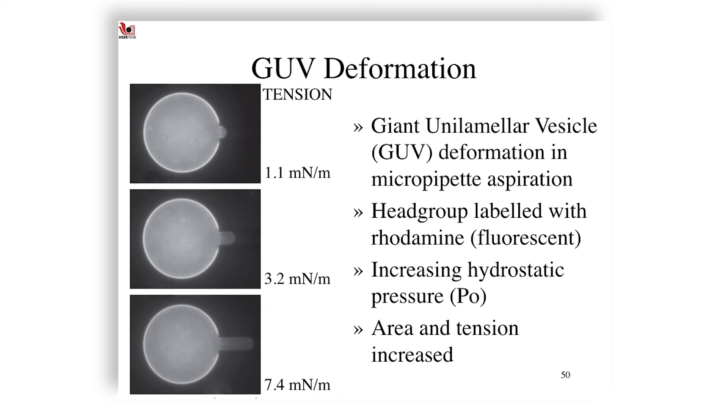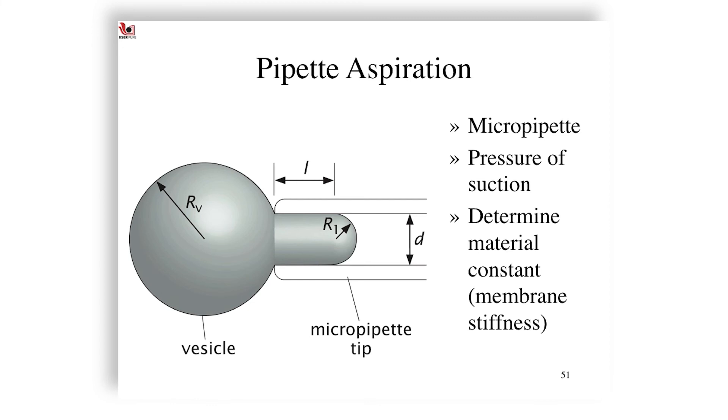Giant unilamellar vesicles, which are bilayers of micrometer scale, prove to be very good model systems for this kind of measurement. GUV deformation can be achieved by creating tension of different values—the tension values over here are 1.1 millinewton per meter, 3.2 millinewton per meter, and 7.3 millinewton per meter. The experiment here involves visualizing the lipid by head group labeling using rhodamine and increasing the hydrostatic pressure and measuring the area and tension as the tension is increased. This pipette aspiration or micropipette aspiration experiment is set up in the following way.